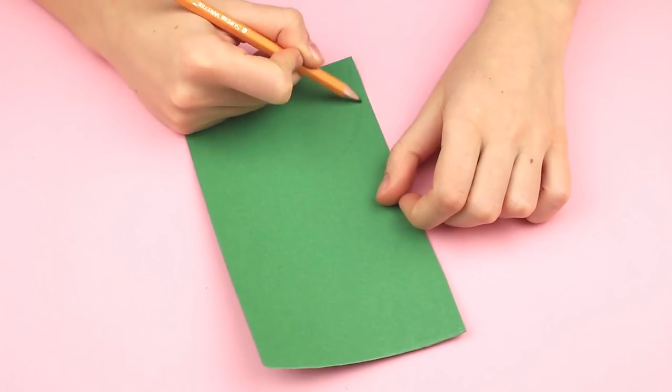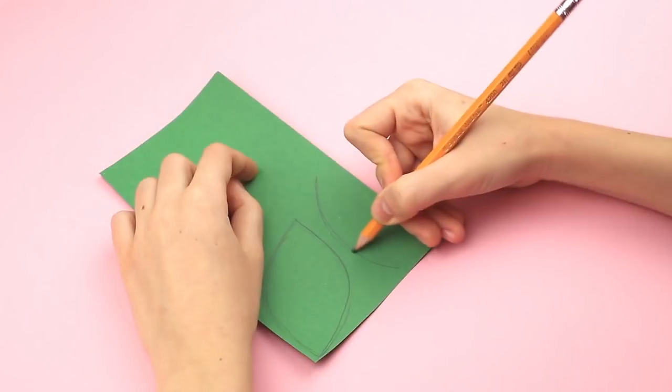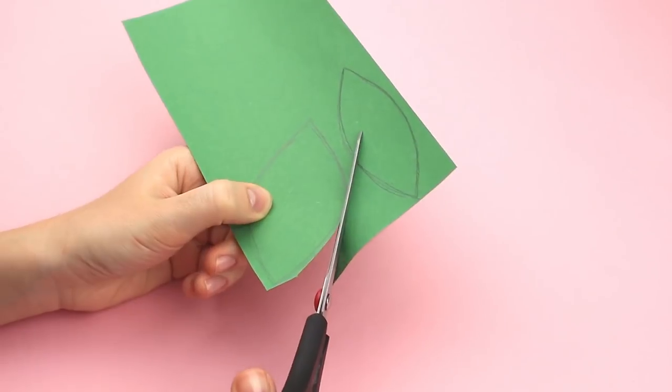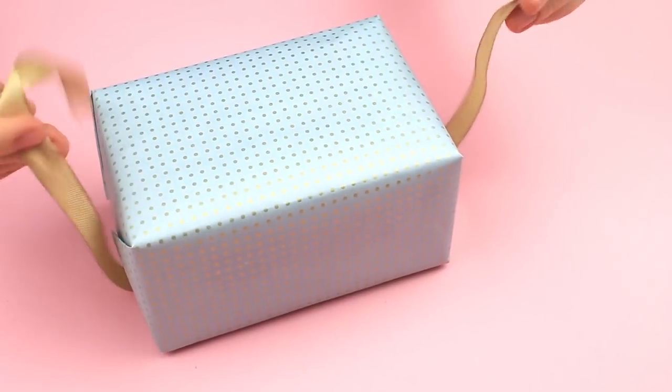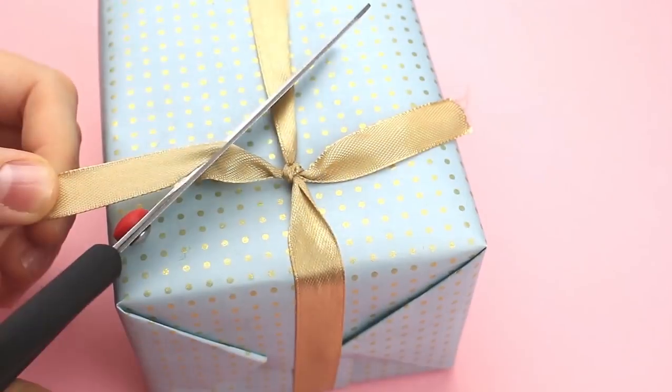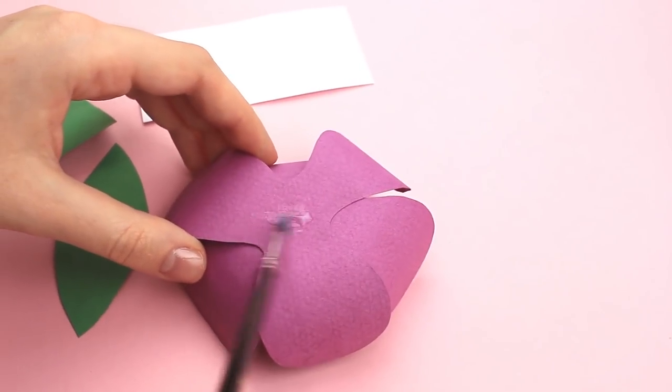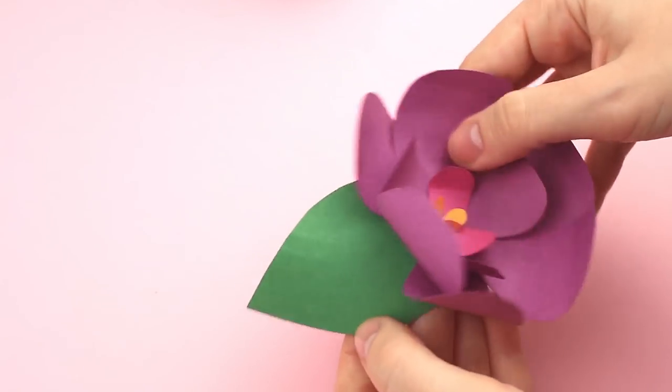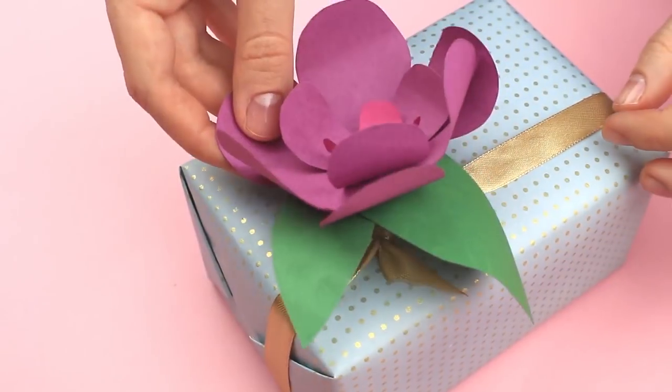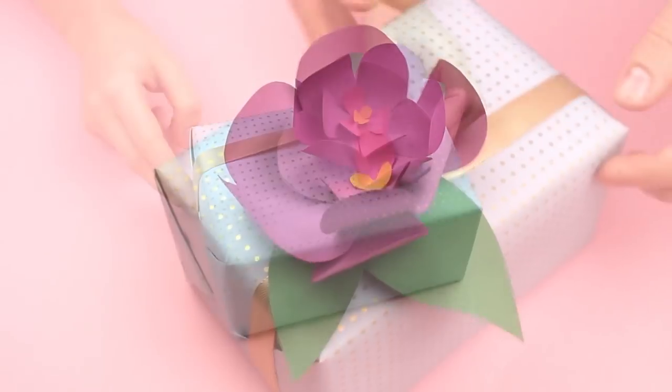Let's add green leaves. Draw two classic leaf shaped details on green paper. Cut them out. Wrap the gift with a ribbon and tie a knot. Snip off the end at an angle. Add some glue to the bottom of the flower. Attach the leaves. Now, use multi-purpose glue. Attach the flower to the ribbon. The fabulous wrapping with a cute flower will perfectly complete any gift.